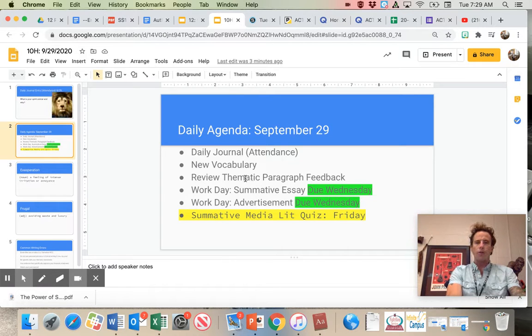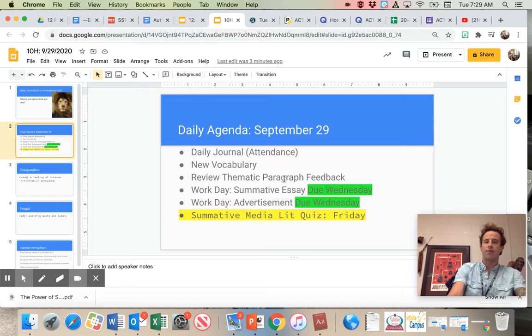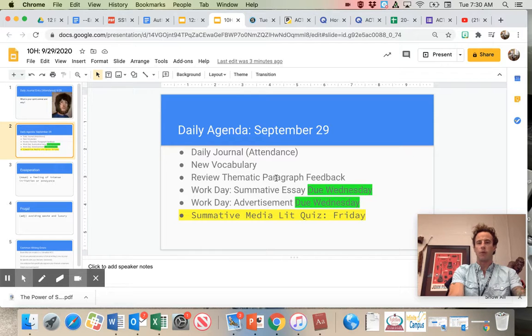I went through and finished up reading and giving feedback to all of your thematic paragraphs you wrote last week. So please go into that assignment. There's a couple of ways to access it. You can go into gradebook and click on the 30-point assignment there, or you can go back and find the folder where you submitted it.